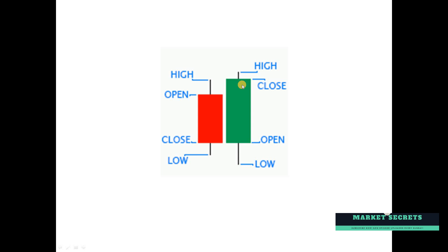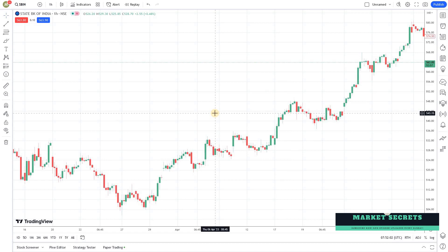Generally, a bullish engulfing pattern indicates a sign of bullish strength. The opposite is true for a bearish engulfing pattern, where you have a small green candle followed by a big red candle which closes below the open price of the previous day — that is a sign of potential bearish strength. You can use the engulfing pattern as a confirmation signal for most strategies, combining it with any indicators, market signals, and filters to produce a high quality, high accuracy entry system.